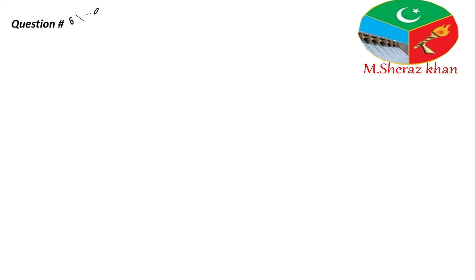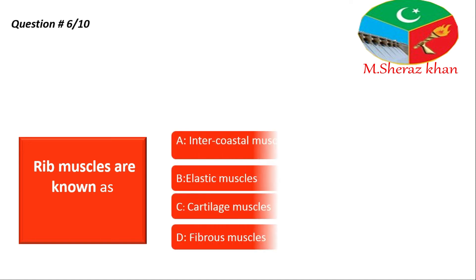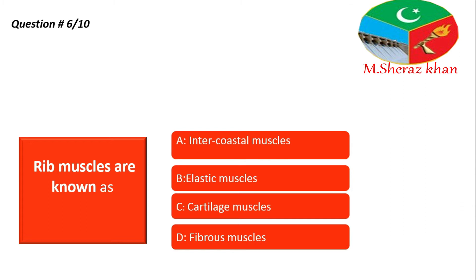Question number six: rib muscles are known as — ke jo rib ke muscles hain unko hum kya kehte hain? Options: A — intercostal muscles, B — elastic muscles, C — cartilage muscles, D — fibrous muscles. I give you 10 seconds, you just think about it and then I tell you what is the right answer.